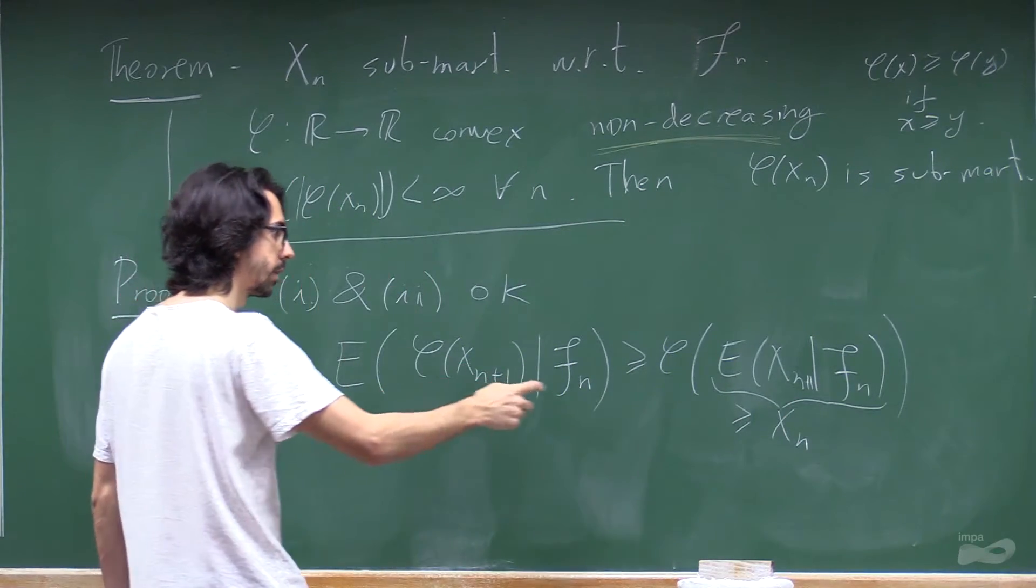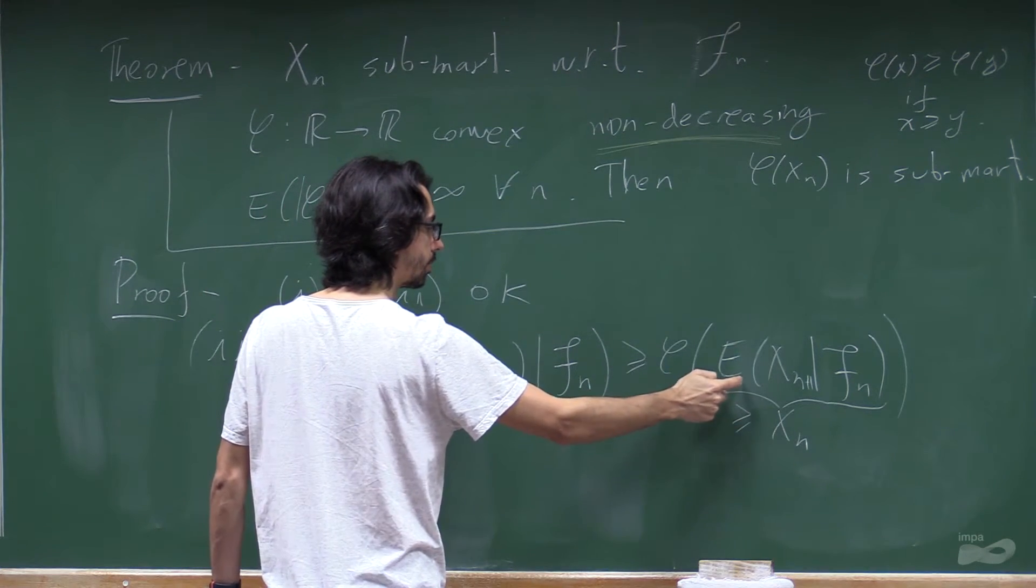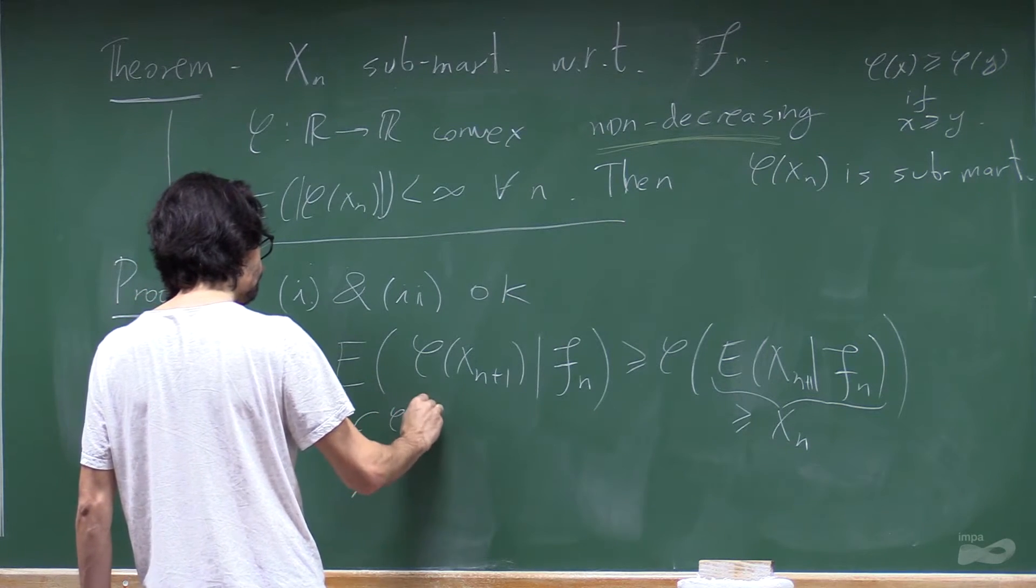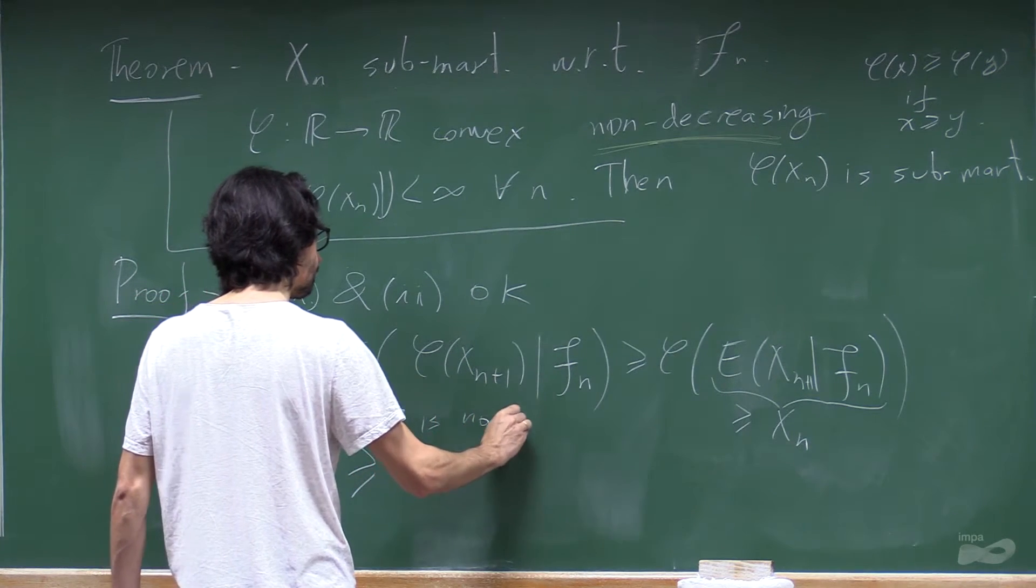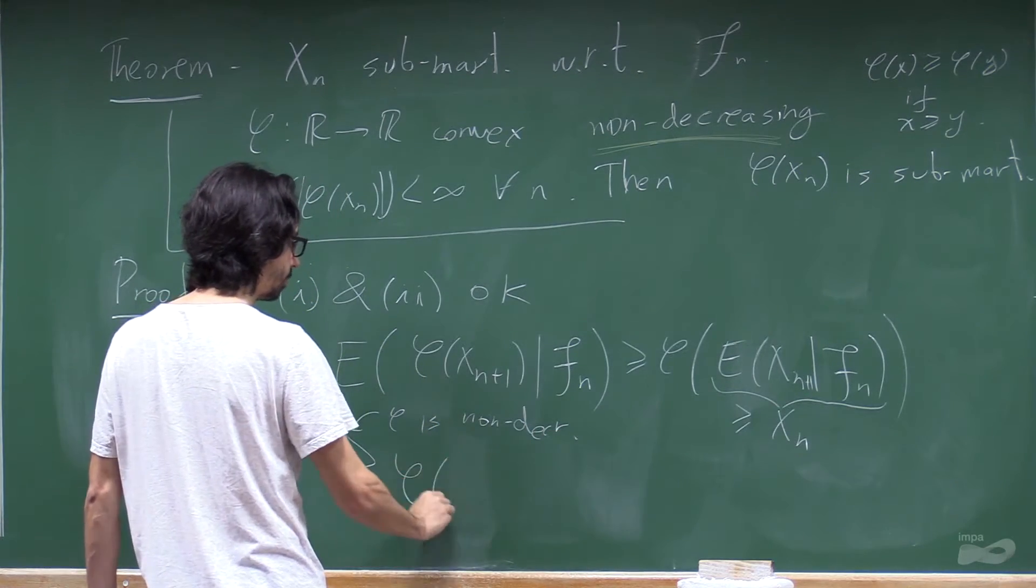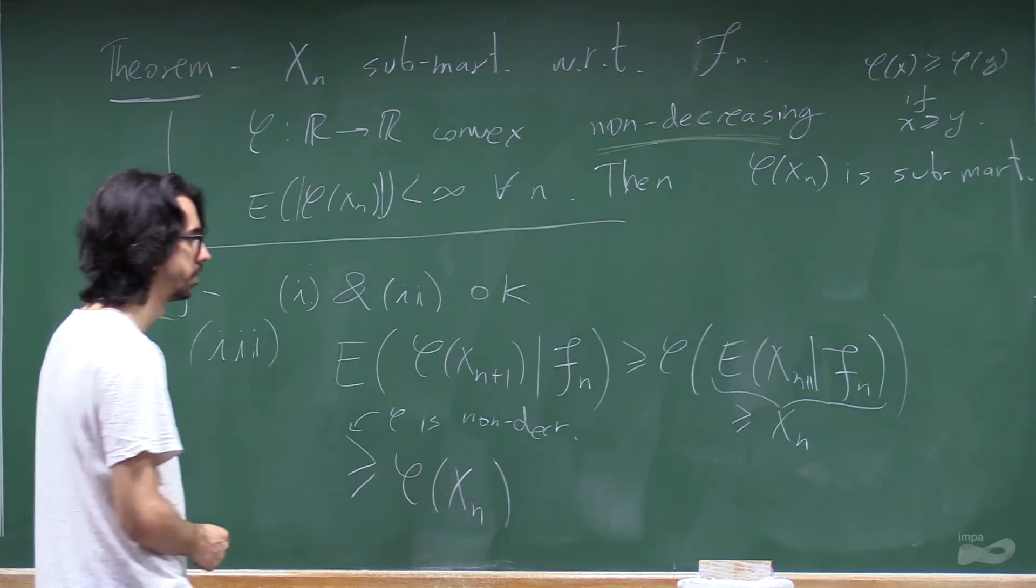But the fact that we can say that this is also bigger comes from the fact that phi is non-decreasing. Then we can actually say that it's bigger than this. And we're done.